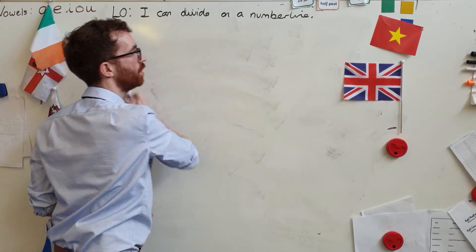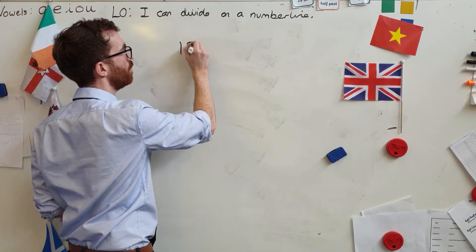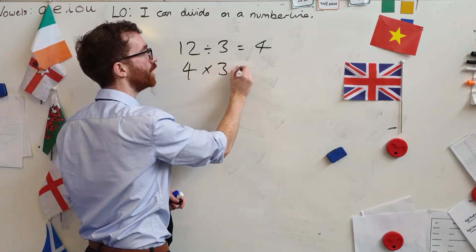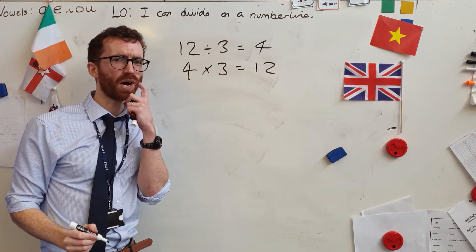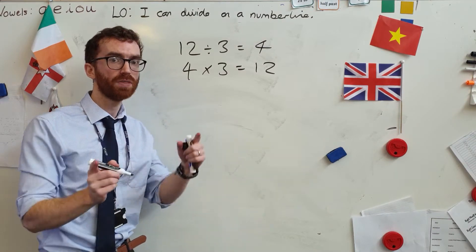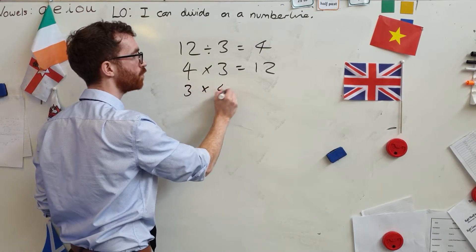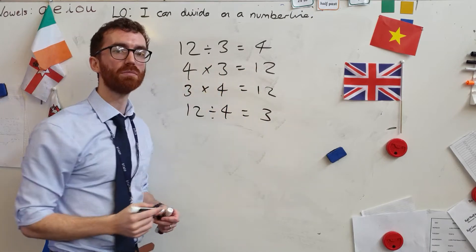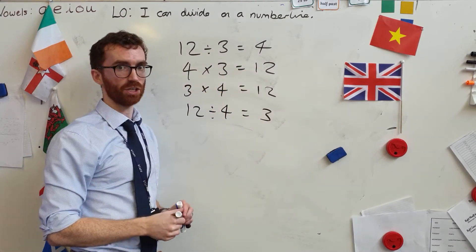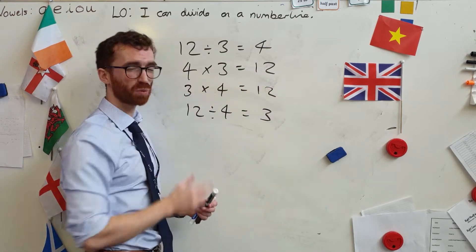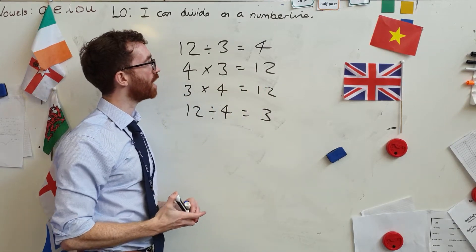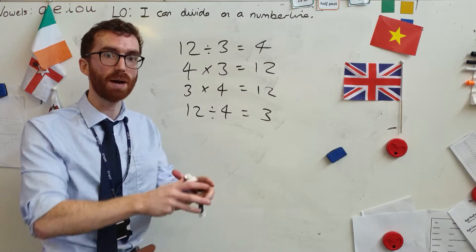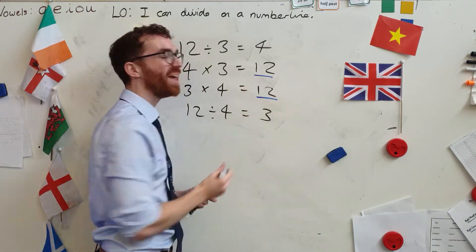Let's look at that when it comes to division. If 12 divided by three equals four, I know that four times three equals 12. What else do I know? Pause. That's right — I also know that three times four equals 12, and 12 divided by four equals three. I can swap these numbers around. I can't say that 12 times three is four, because 12 times three is 36.